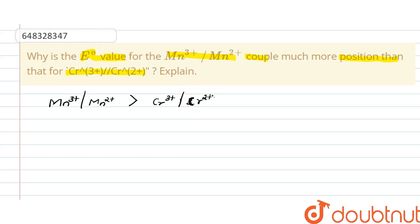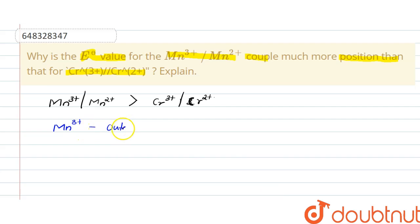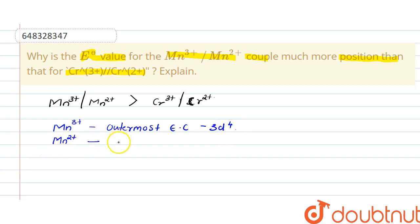This is because Mn³⁺ has the outermost electronic configuration of 3d⁴, whereas Mn²⁺ has the outermost electronic configuration of 3d⁵.